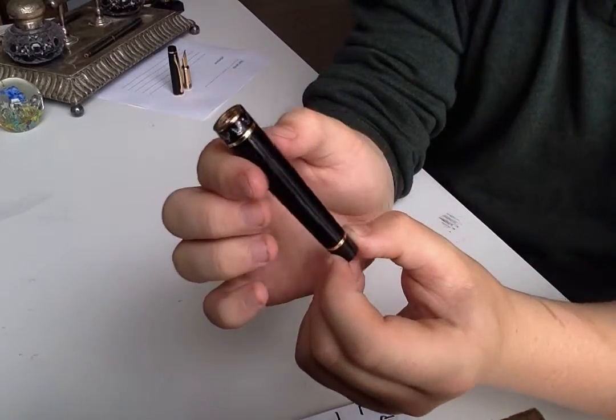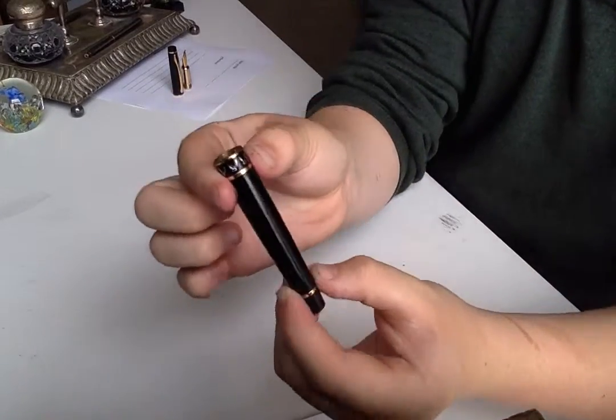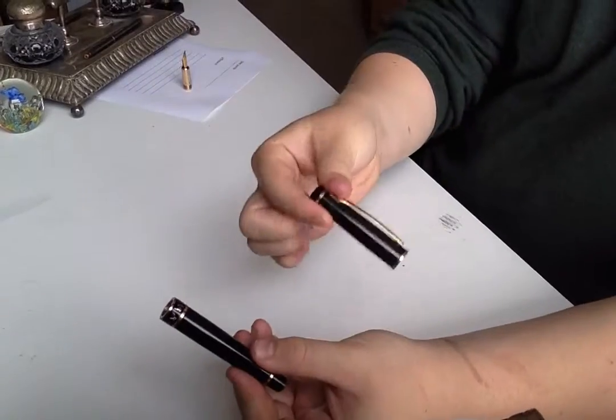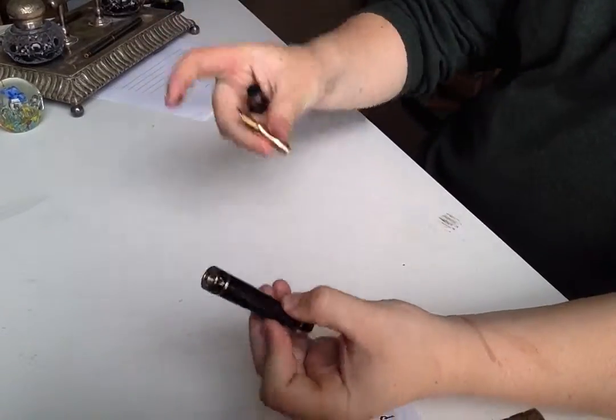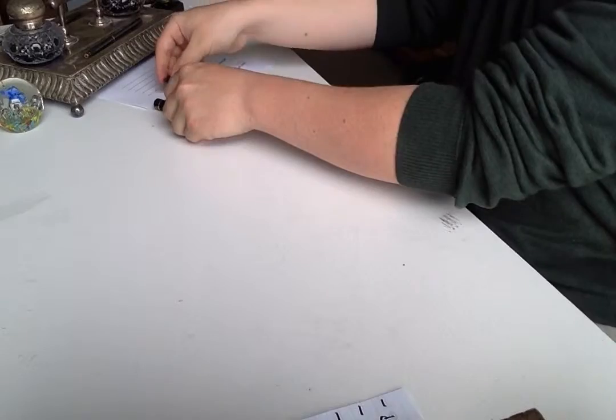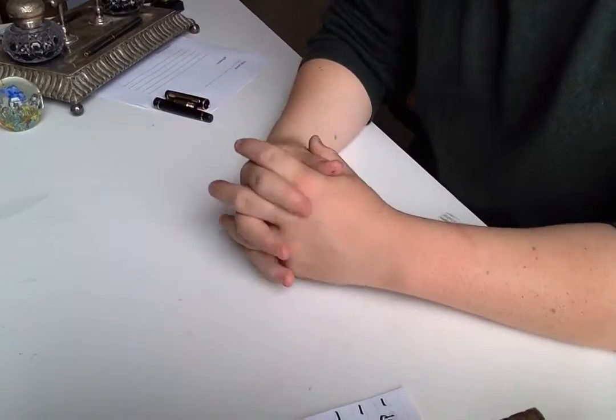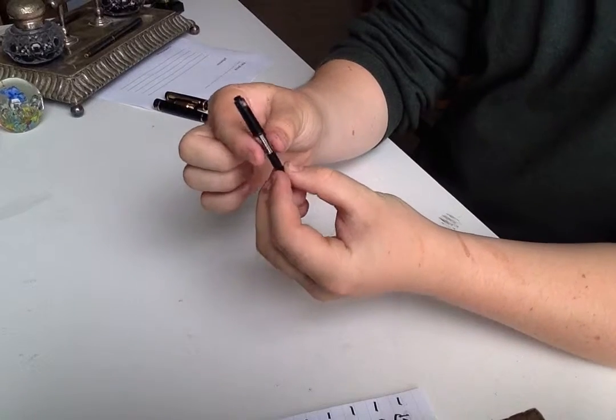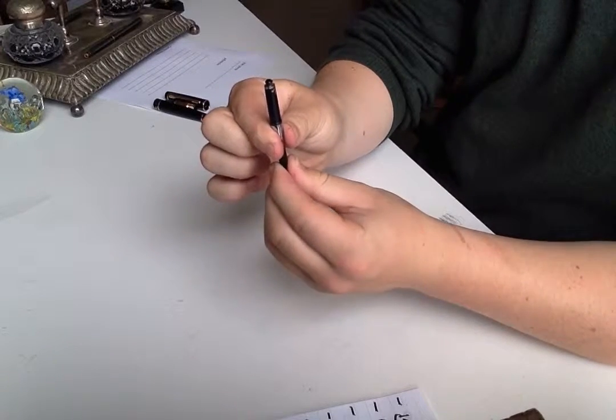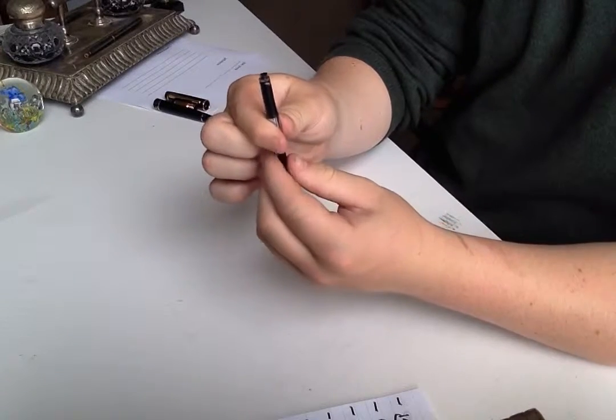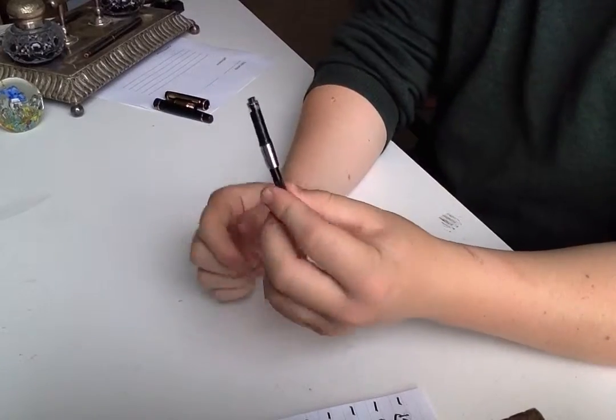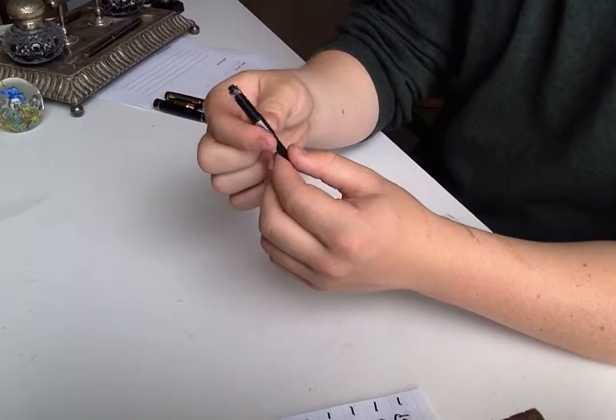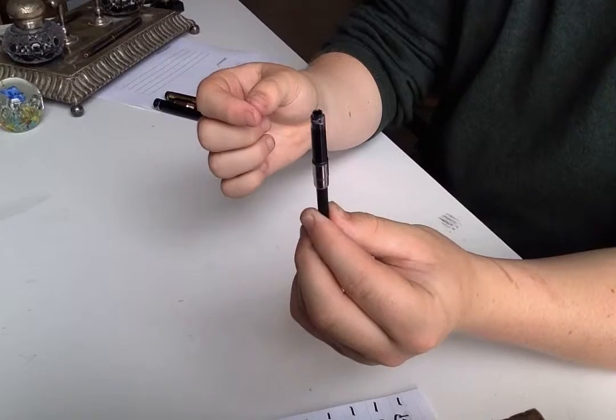Then underneath the word Hero you have the Hero logo, and finally the pen number 1012. So that is the barrel, that is the cap, and that is the nib. It's quite a basically designed pen, but I quite like that. I quite like a pen that isn't too ostentatious. And the pen itself came with a Hero converter.